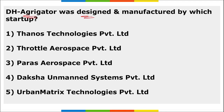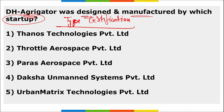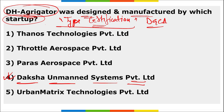India's first petrol-operated drone, named DH Aggregator, received type certification from DGCA (Directorate General of Civil Aviation). It was designed and manufactured by Daksh Unmanned Systems Private Limited, a Tamil Nadu-based startup. The cost per DH Aggregator drone ranges from ₹13 to ₹15 lakh.